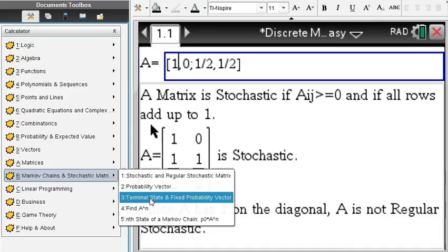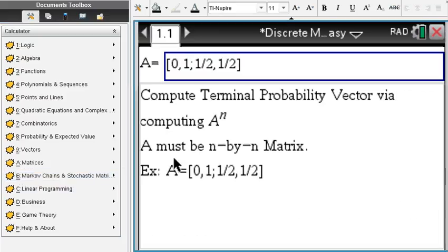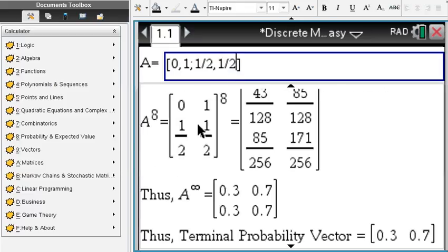We can find a terminal state of an entered matrix, same matrix as we had before. We just have to keep raising it to a higher and higher exponent.